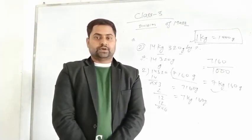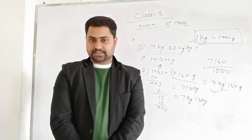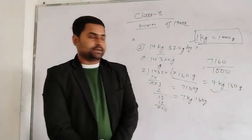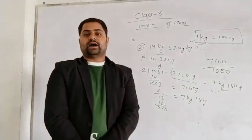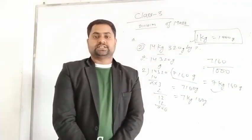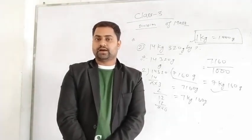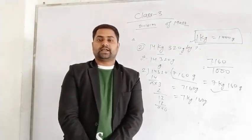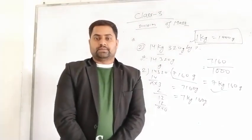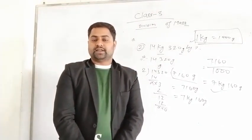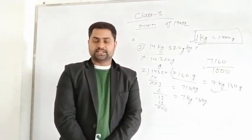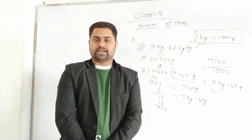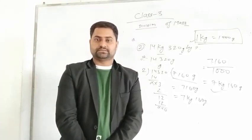Students, you do multiplication and division of mass. If you have any doubt or problem, ask me in class time. Multiply or divide the mass the same way as natural numbers, but write kg or gram after the digits. If gram is given, write gram; if kg is given, write kg. If both units are given, convert to the same unit first, then divide, and after dividing, change back to kg and gram units. Thank you so much. Have a nice day.